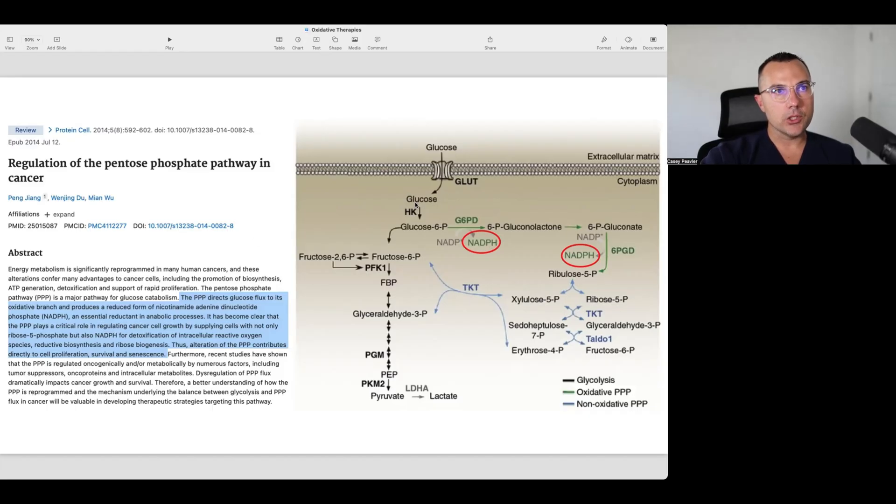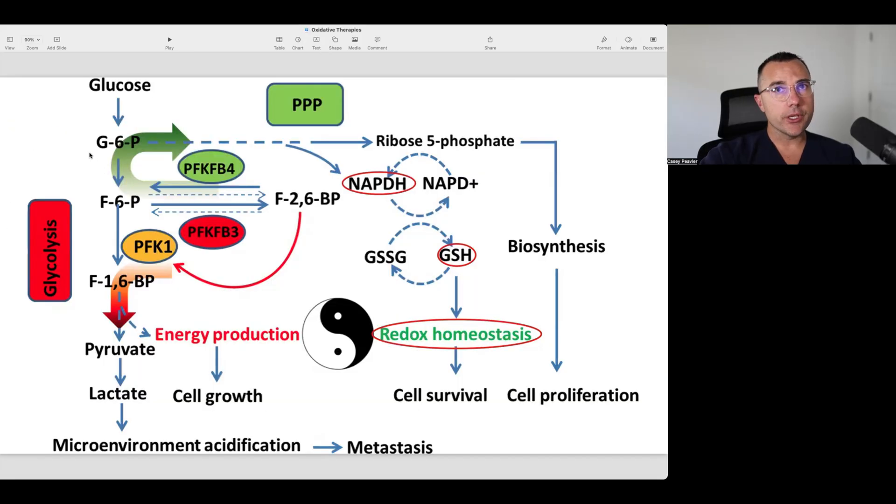We see here that glucose can either go towards lactate, which we've talked about at length, this process of glycolysis and the fermentation of glucose into lactate. We talked to some degree about how glucose can also be shunted towards the PPP. We have not talked much about how that is important for the regulation of redox homeostasis within cancer cells. This is a pretty good graphic that illustrates how this actually happens.